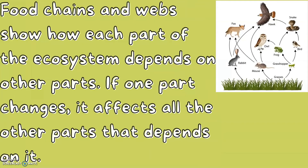Food chains and webs show how each part of the ecosystem depends on other parts — this is called being interdependent. If one part changes, it affects all the other parts that depend on it.